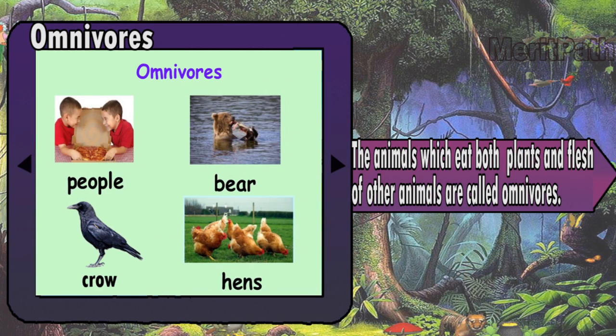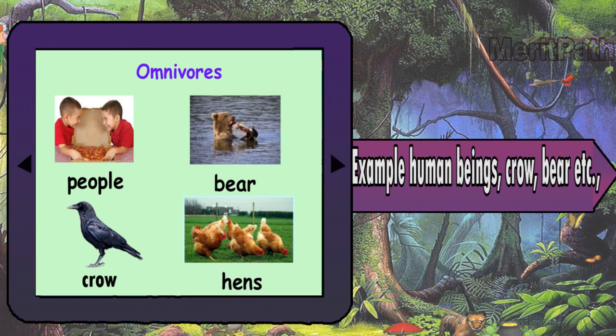Omnivores: the animals which eat both plants and the flesh of other animals are called omnivores. Examples: human beings, crow, bear, etc.